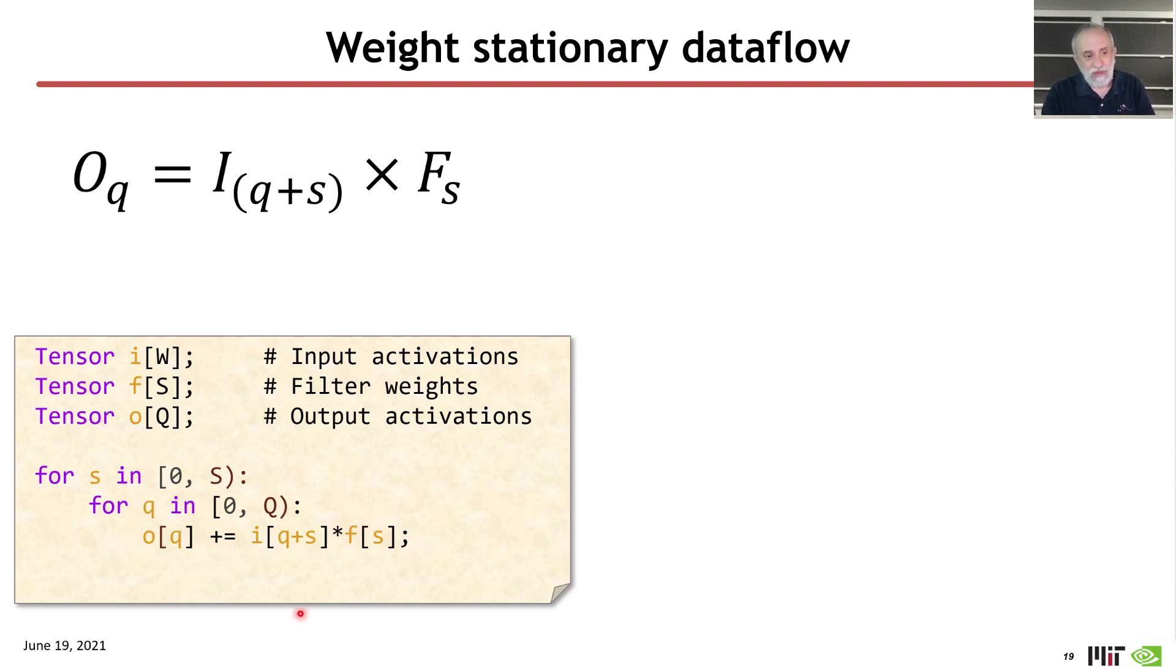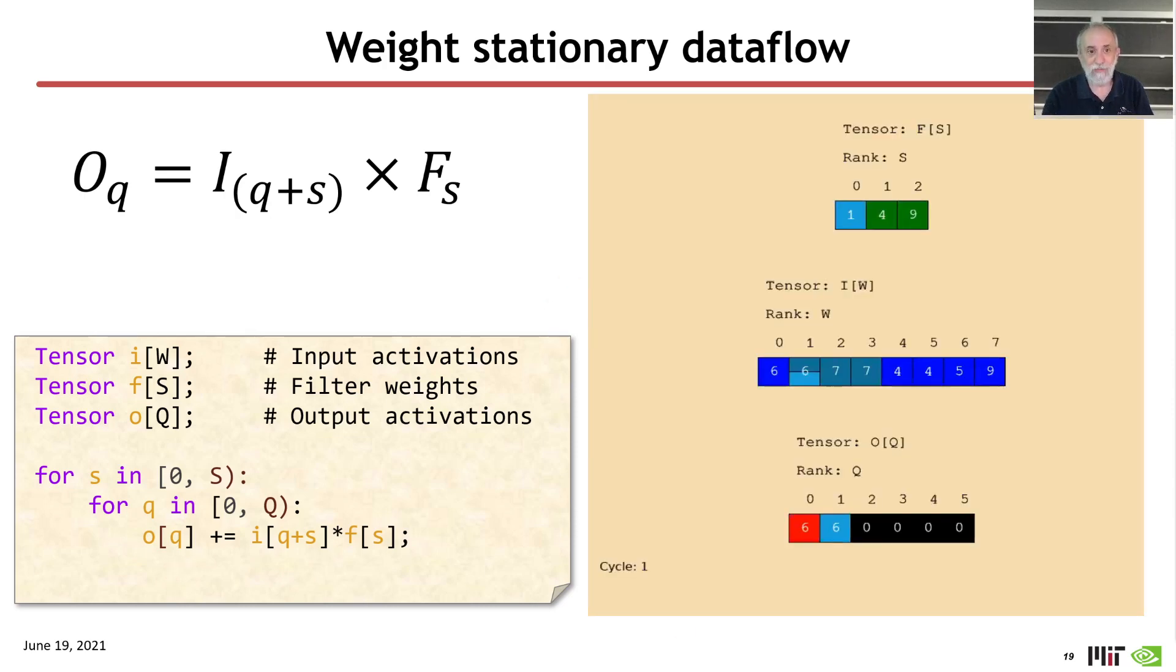The point is that this loop nest is actually providing a schedule in time of when the activities for accessing the input arguments and contributing to the output arguments are happening. So we can actually create an animation that shows the sequence of activity in the three operands. And we use a convention of filter weights are green and input activations or FMAP values are blue and the output activations or the output FMAP values are red. And so what we see here is that for a sequence of steps, the filter weight remains stationary.